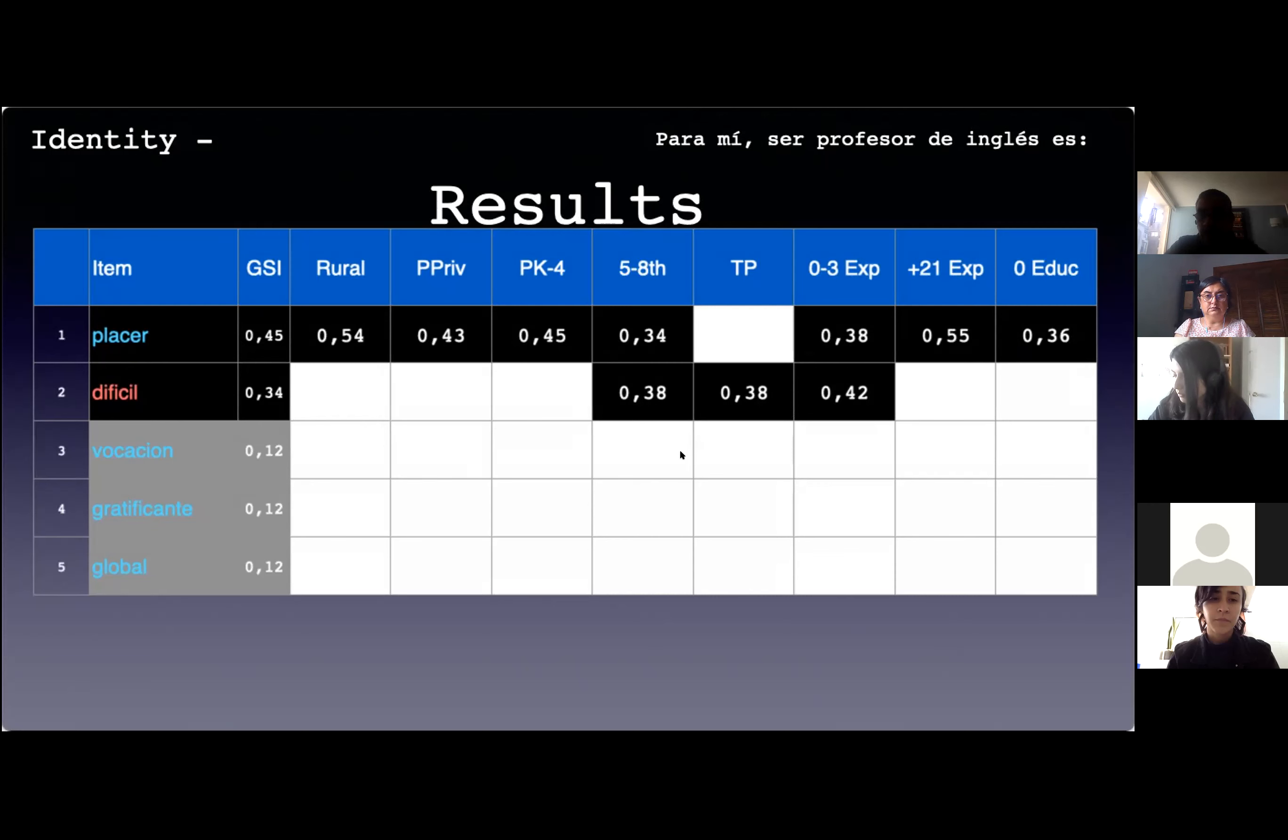Looking at the central kernel subgroups of the sample that show a different pattern from the general salience index structure, we can observe that for rural school teachers, English is strongly associated with PLACER, but DIFÍCIL does not appear as part of the central kernel for their social representation. A similar pattern is observed for private school teachers, teachers of young learners, as well as teachers with extensive teaching experience and teachers who have no in-service education. For teachers who teach in middle school and for novice teachers, the central kernel presents a reverse pattern, being DIFÍCIL stronger than PLACER. In the case of teachers in technical schools, the item PLACER lacks a significant salience index.